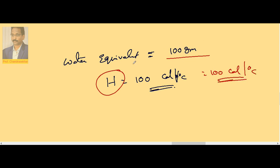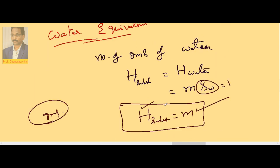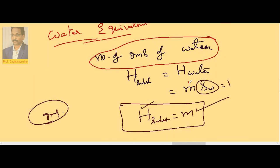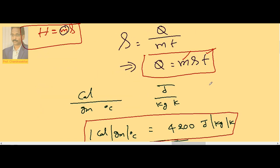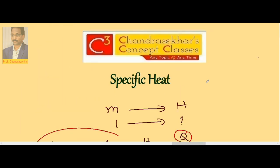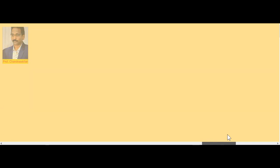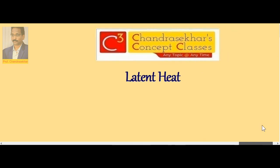The magnitude of H and water equivalent in CGS are equal — both are 100 in this example. So water equivalent is the number of grams of water which has the same heat capacity as that of the given substance. Here the state of the substance is not changing; we are simply raising the temperature.